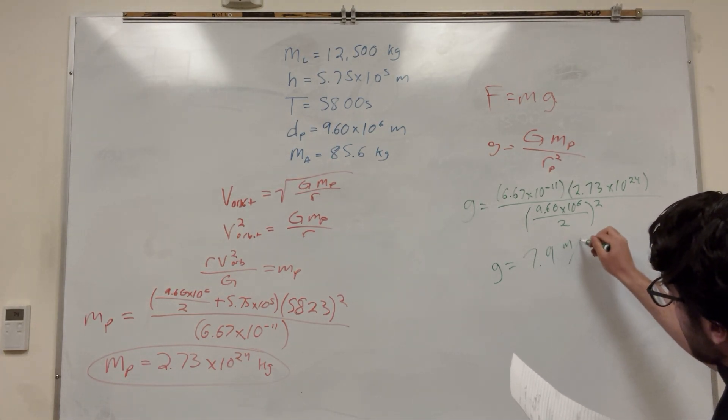Times the mass of the planet we just found, 2.73 times 10 to the 24. Then divided by the radius of the planet squared. So this is not the radius of the orbit. This is just the radius of the planet. So don't get this mixed up again with your radius of the orbit. We're just trying to find the radius of the planet on this equation. So this radius is 9.60 times 10 to the 6th divided by 2, and then square that. So then you're going to find this is equal to 7.9 meters per second squared.